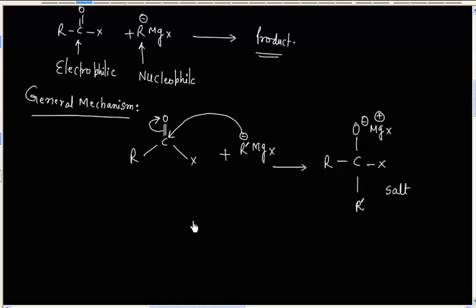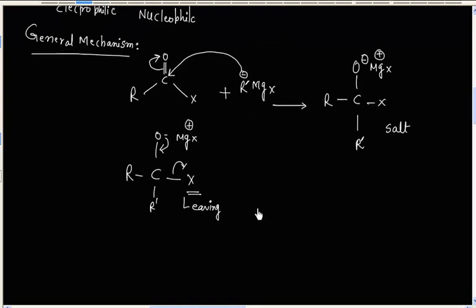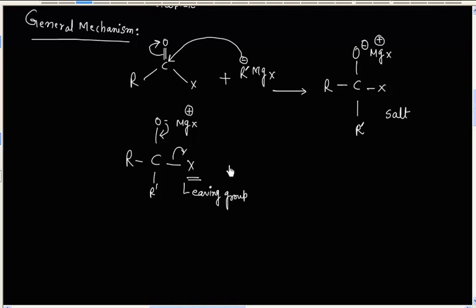In the next step, this salt will eliminate the Halogen. The negative charge will expel this leaving group. So we will have a ketone formed. The final product is a ketone.